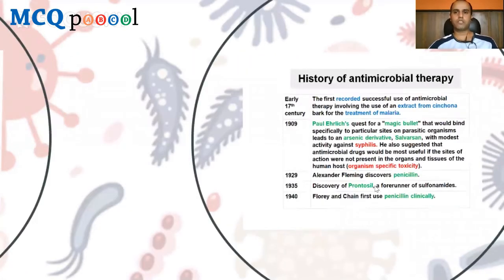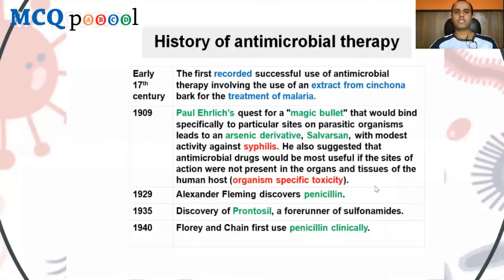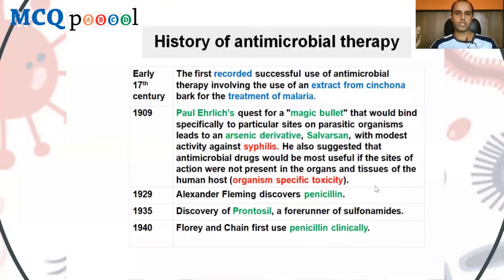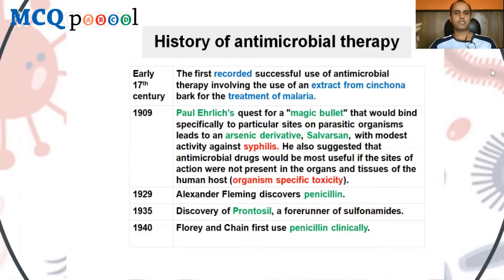Looking at the history of antimicrobial therapy, there is documented evidence of extract from cinchona bark being used in malaria back in the 17th century, and it could have been used even before that. In 1909, Paul Ehrlich's quest for a magic bullet started — he wanted to treat parasites using a magic bullet, leading to the discovery of the arsenic derivative Salvarsan, which has modest activity against syphilis.